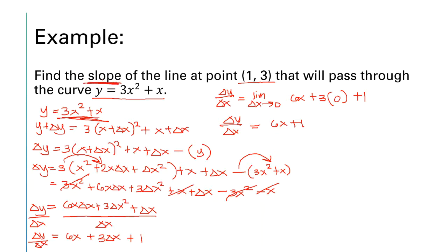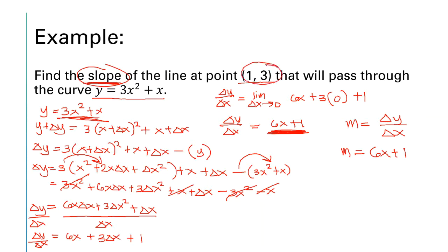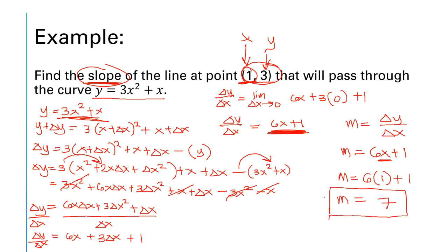We are finding the slope, so we're not done yet. Since m = delta y / delta x = 6x + 1, we substitute the given point where x = 1. So m = 6(1) + 1, which gives us m = 7. This is the slope of the curve at point (1, 3).